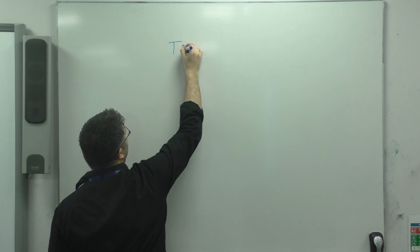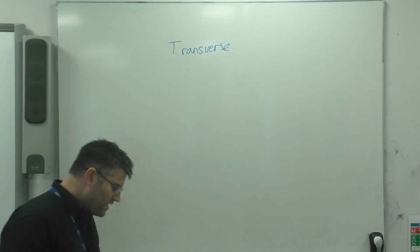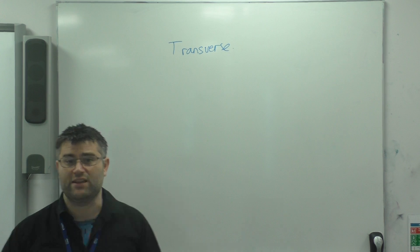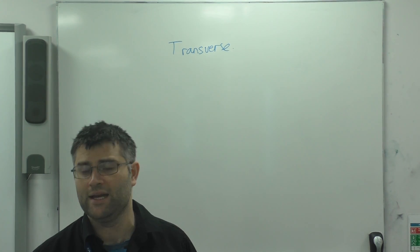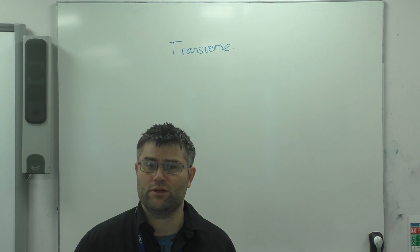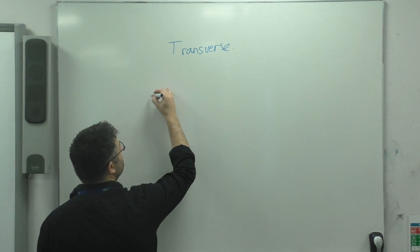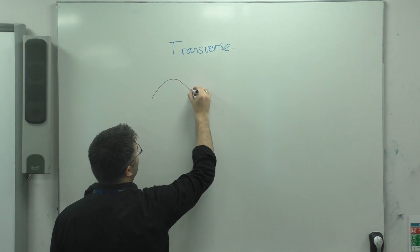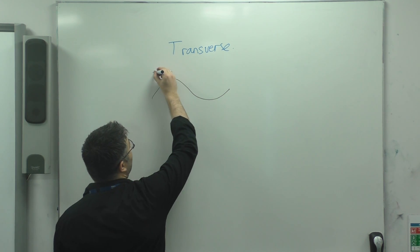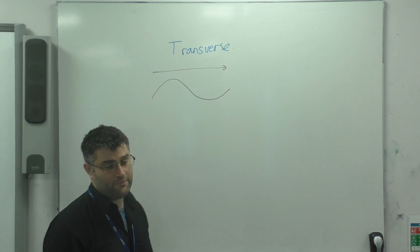We're going to start out with transverse waves. An excellent example of a transverse wave is anything on the electromagnetic spectrum — so light, gamma rays, radio, everything in between is all transverse waves. Transverse waves have that standing wave shape. They transfer energy from point to point in that direction.